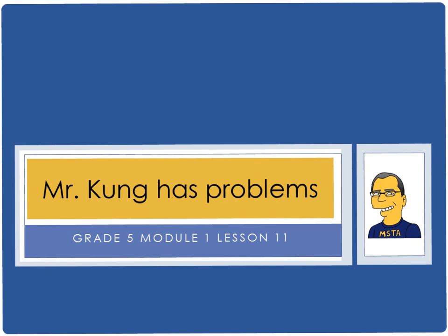Hello, and welcome to another episode of Mr. Kong Has Problems. Tonight, in Grade 5, we are working on Module 1, Lesson 11, and tonight it is a mouthful. We are multiplying a decimal fraction by single-digit whole numbers, relating to a written method through application of the area model and place value understanding, and explaining the reasoning that we used. Well, let's take a look at a few problems, and hopefully we'll be able to distill that mouthful of words down into some solutions that we can try to model for you.